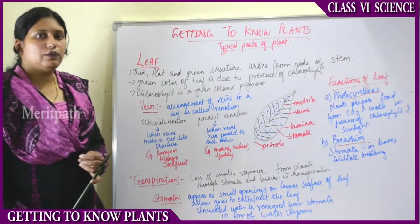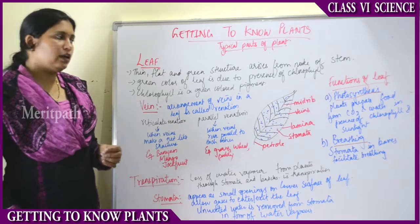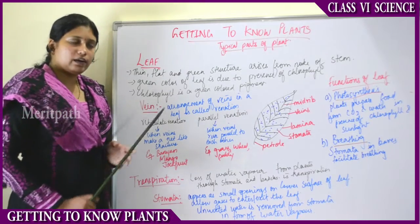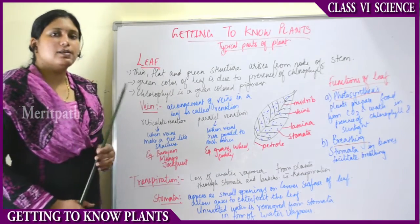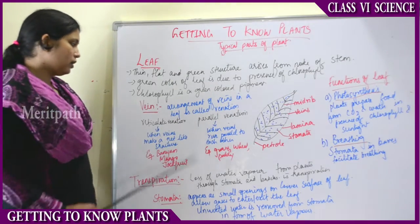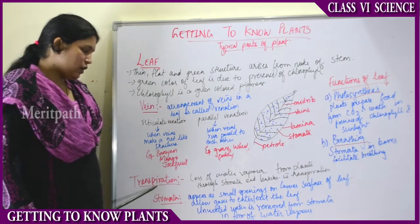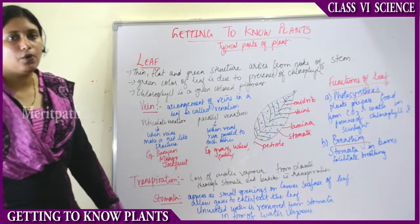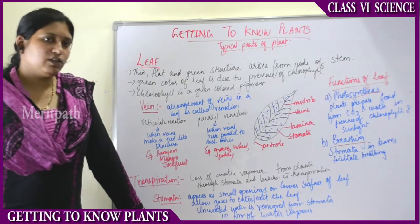So venation is the arrangement of veins on the leaves. Venation can be of two types: reticulate, where veins appear as a network or net-like structure, and parallel venation, where the veins run parallel to each other. That is about the veins of the leaf.